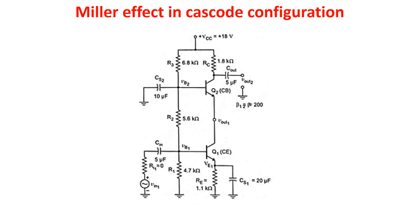Here we see a cascade configuration. This configuration is composed by a common emitter in series with a common base configuration, and it is widely used because of its better frequency response in comparison with a common emitter.